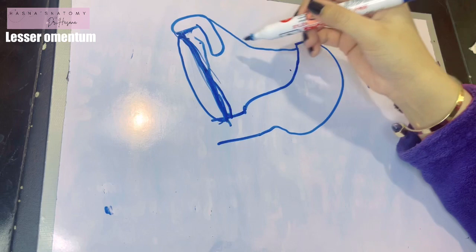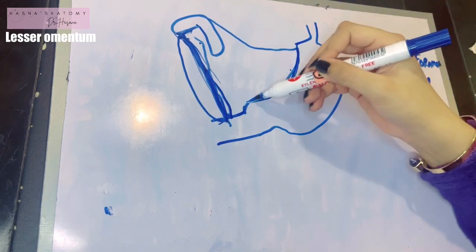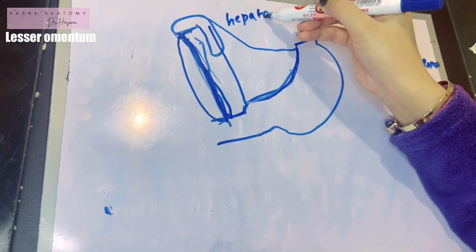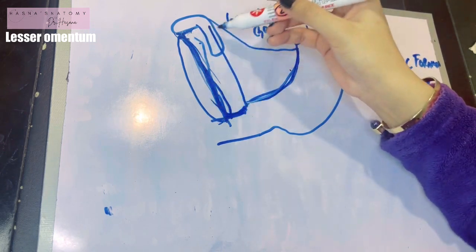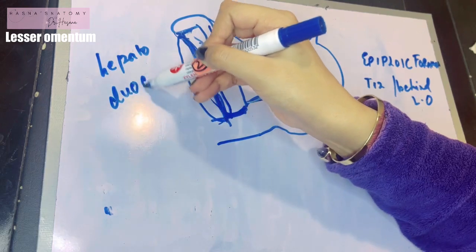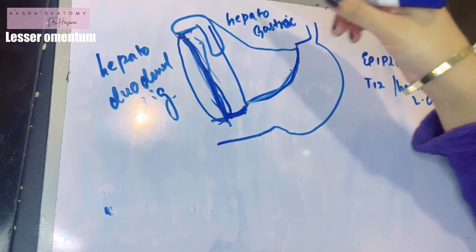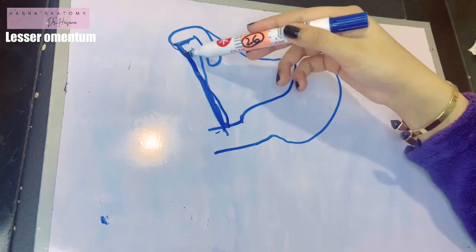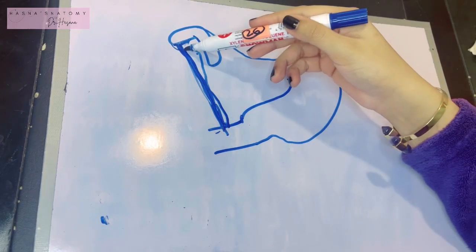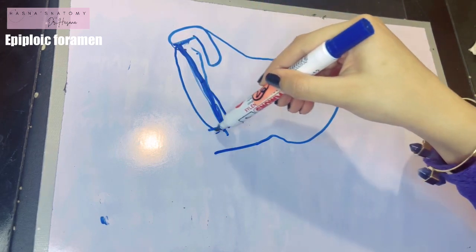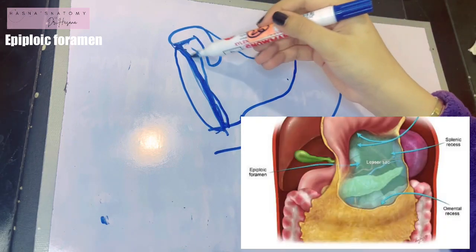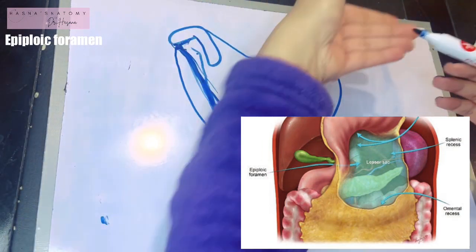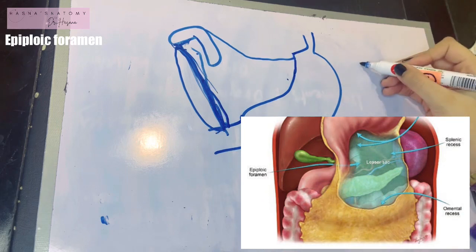The part of the lesser omentum extending from the lesser curvature of the stomach to the liver is known as the hepatogastric ligament, and the part between the duodenum and the liver is known as the hepatoduodenal ligament. The lesser omentum is divided into these two parts, also known as ligaments — because a peritoneal fold between two organs is usually a ligament. The right margin of the lesser omentum is free, and behind this free right margin is where the epiploic foramen lies — the communication between the greater sac anteriorly and the lesser sac behind the stomach.